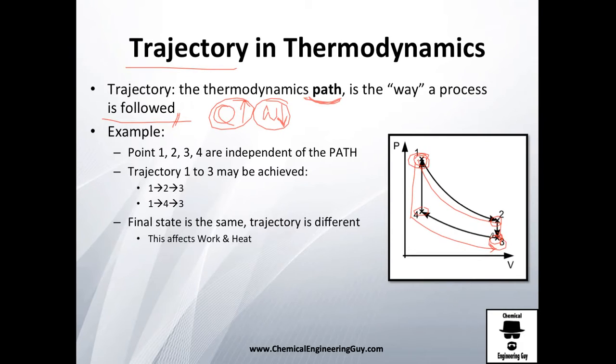Let me show you: one to two will be isothermal and two to three will be isovolumetric. In the other case, one to four will be isovolumetric and four to three will be adiabatic.